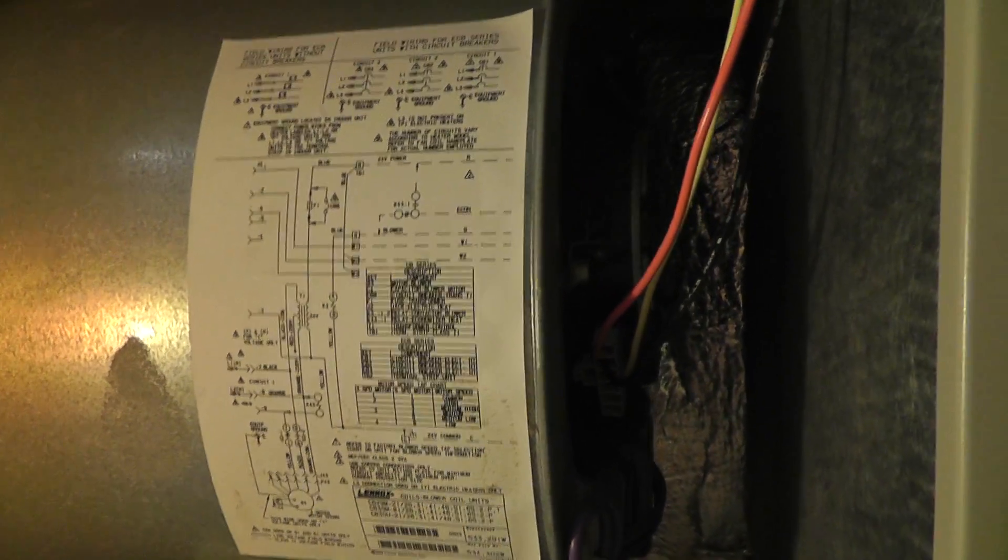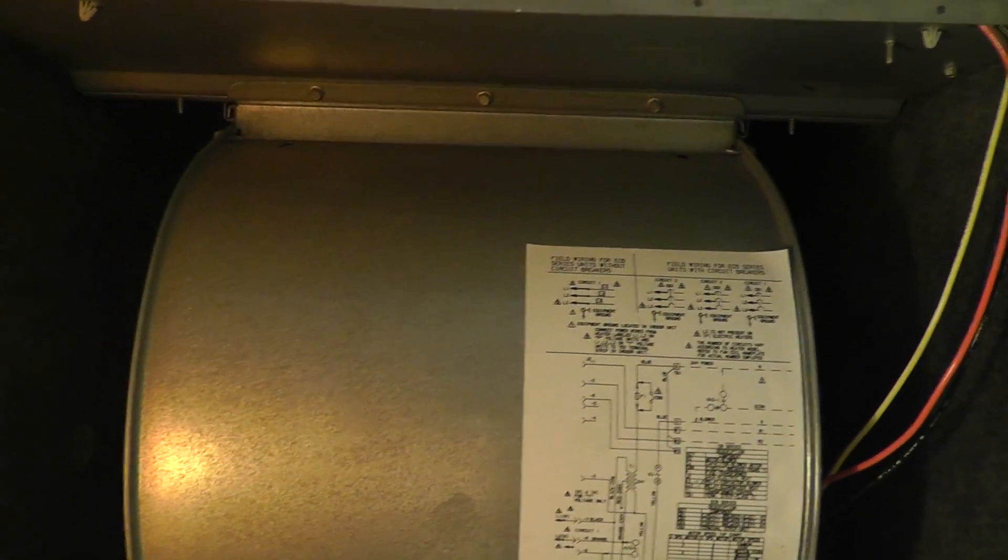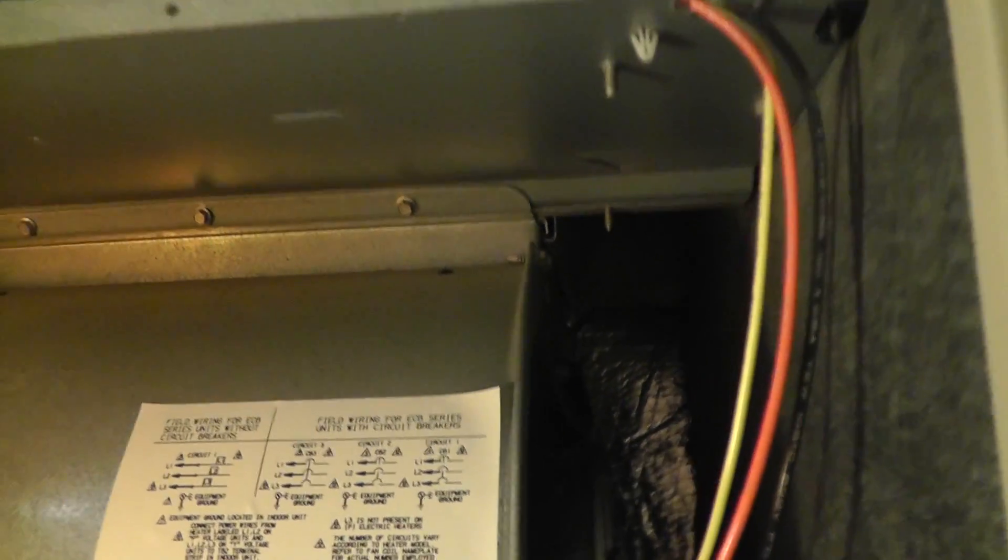What if I need to change the whole blower motor assembly? How do I get to that thing, right? It's way over here on these mounts. Well, this whole thing actually comes out. There's some screws that are up there, and this attaches this whole blower motor assembly to the air handler.